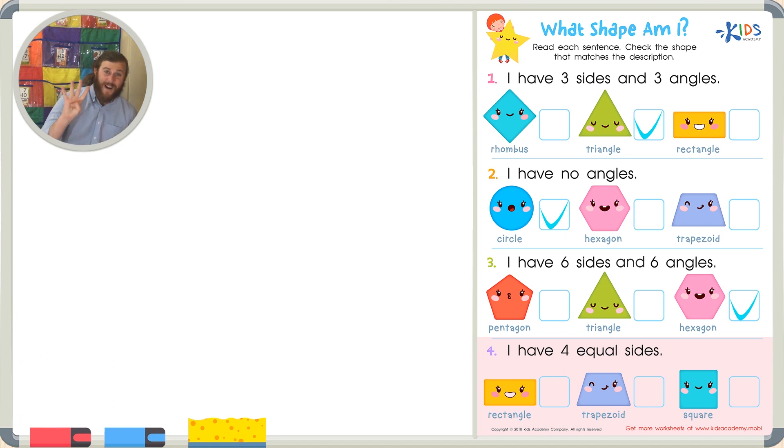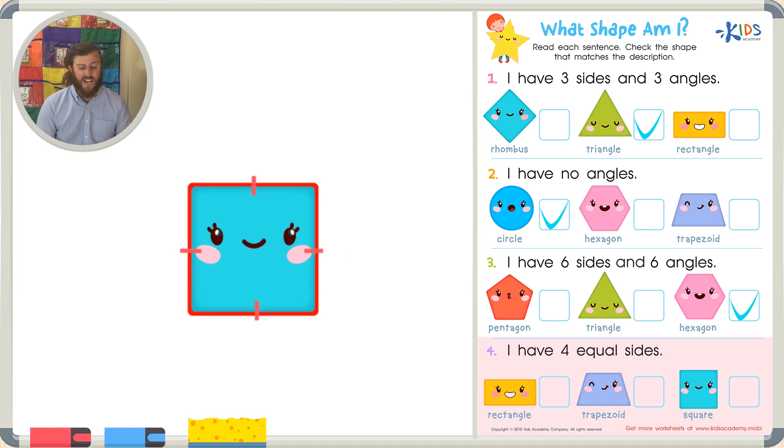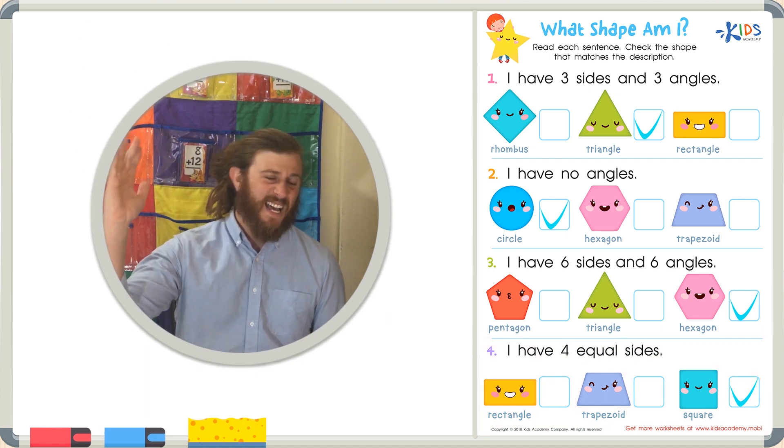Finally, our last description states: I have four equal sides. Do you know what shape they're talking about? Well, this one's kind of tricky because our rectangle has four sides and our trapezoid also has four sides. Our last shape, the square, also has four sides, but it's a little bit different than the other two shapes. Do you know why? It's because it has four equal sides. Each side is the same length, and that's what makes a square a square. So a shape with four equal sides is a square.